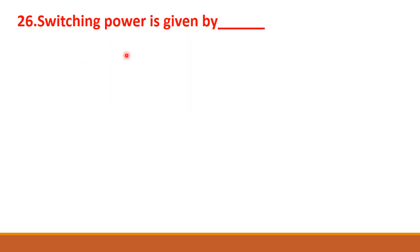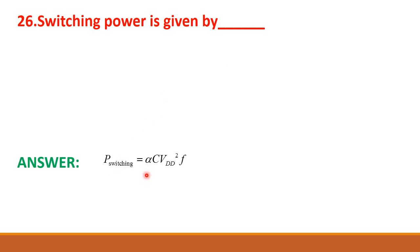Next question: switching power is given by dash. The formula for switching power is P_switching = α × C × VDD² × F, where alpha is the activity factor, C is capacitance, VDD is supply voltage, and F is the frequency.